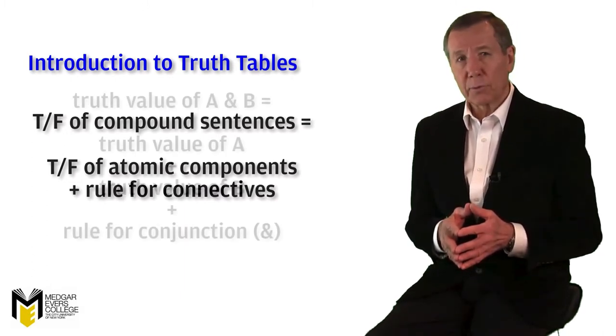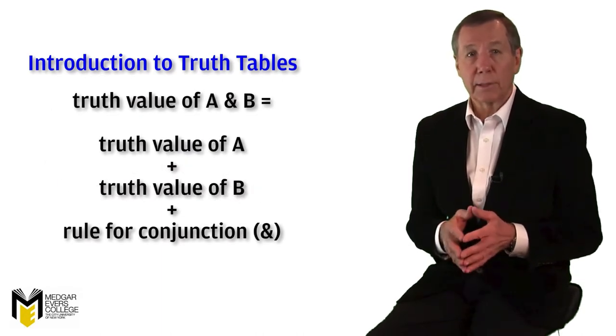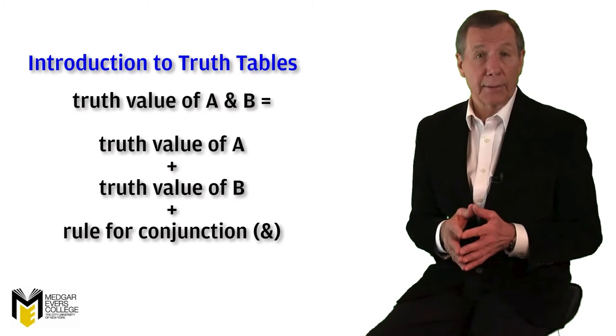In order to know the truth value of a ampersand b, for instance, you only need to know the truth value of a and the truth value of b, along with the rule for conjunction.